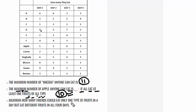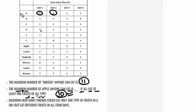Question 3: maximum how many friends could eat only one type of fruits in a day, but eat different fruits across all 4 days? We have A eating 6 fruits on day 1 — that could be singhara. But on day 2, A has to eat 6 fruits of one type, and no fruit is available in quantity 6. So A is not a possible case.